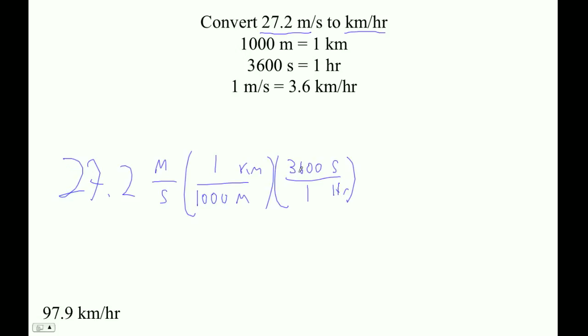And now I'm set this times this times this. So 27.2 times 3,600 divided by 1,000. That's 97.92.